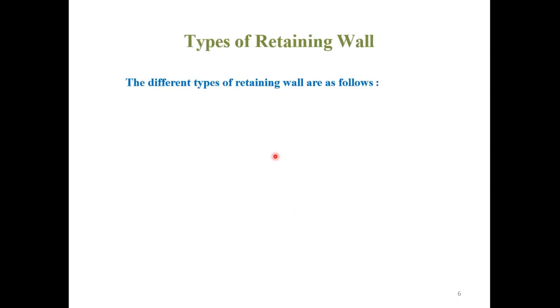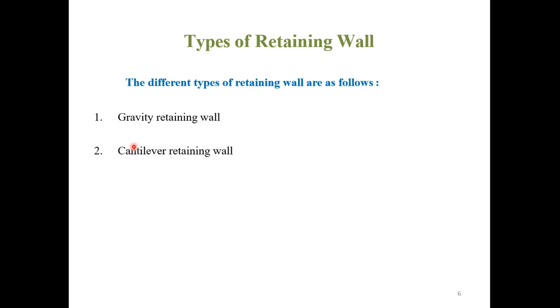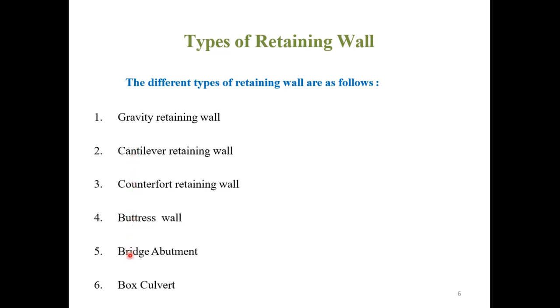In our syllabus, the different types of retaining walls are as follows: the first one is the Gravity Retaining Wall, Cantilever Retaining Wall, Counterfort Retaining Wall, Buttress Wall, and Bridge Abutment.